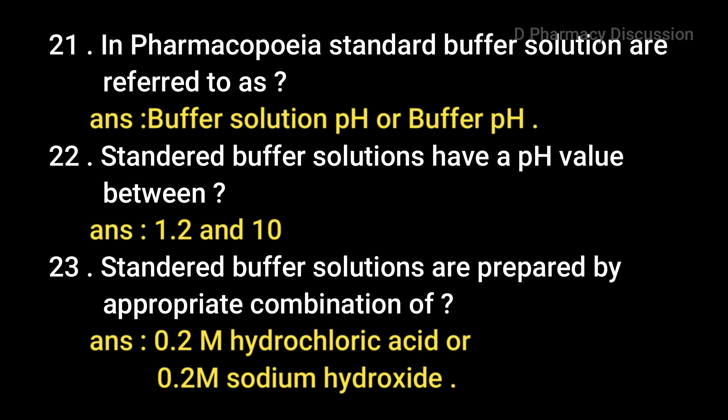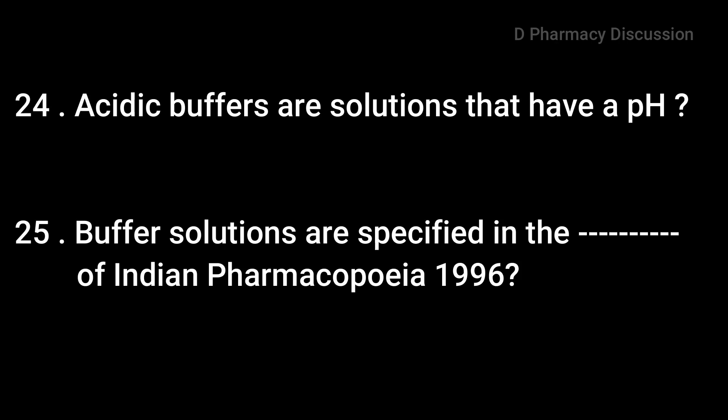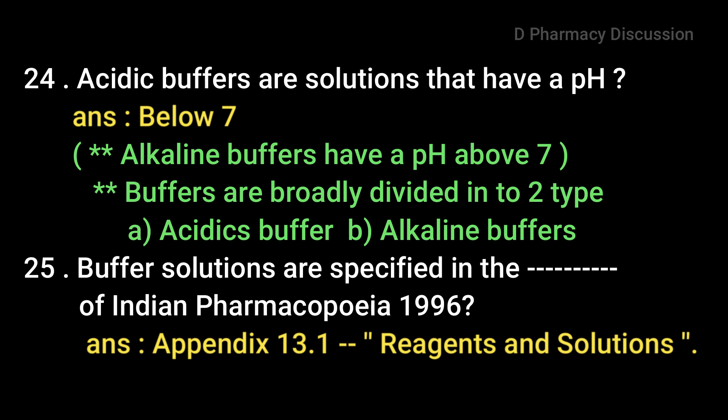Next question: in the pharmacopoeia, standard buffer solutions are referred to as buffer solution pH or buffer pH. Standard buffer solutions have a pH value between 1.2 to 10. Standard buffer solutions are prepared by appropriate combination of 0.2M hydrochloric acid or 0.2M sodium hydroxide. Acidic buffers are solutions that have a pH below 7. A buffer solution is one which resists changes in pH when small quantities of an acid or alkali are added to it. Buffers are broadly divided into two types: acidic and alkaline buffer solutions.